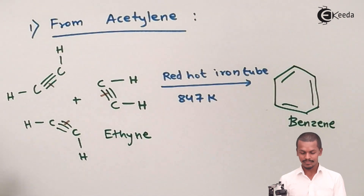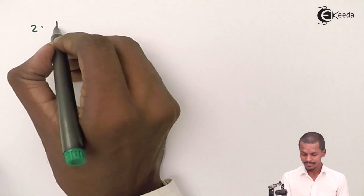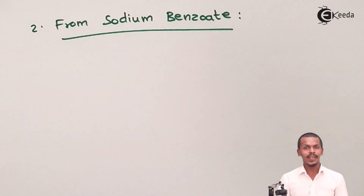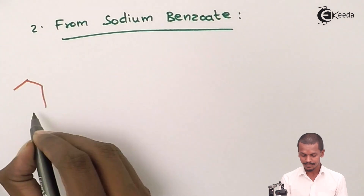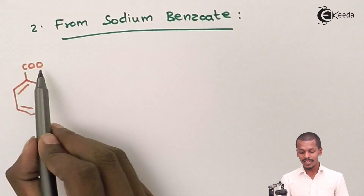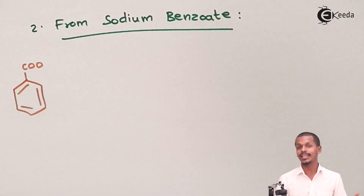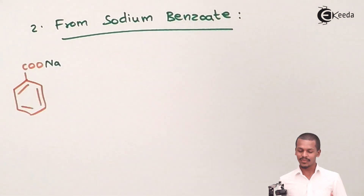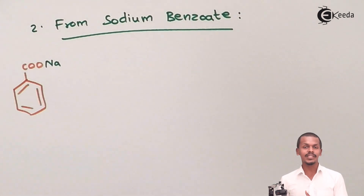Now let us move on to the next method — preparation of benzene from sodium benzoate. Sodium benzoate is the sodium salt of benzoic acid. Benzoic acid has a carboxyl group attached to the benzene ring. When the hydrogen of the carboxyl group is replaced by sodium, it becomes sodium benzoate. We need to convert this into benzene.